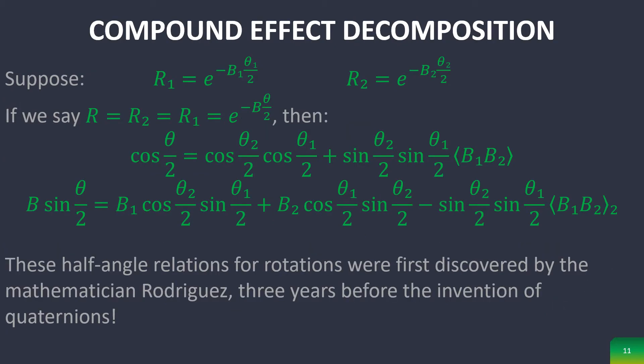And then there's some stuff that's very interesting to know but it's not super useful at the moment. But basically there's compound effect decomposition right here, which you can basically prove that given these two rotors and then this rotor which is defined as these, you can create these half angle relations.